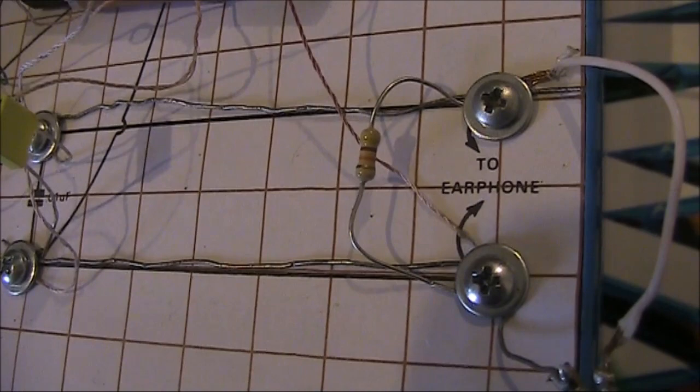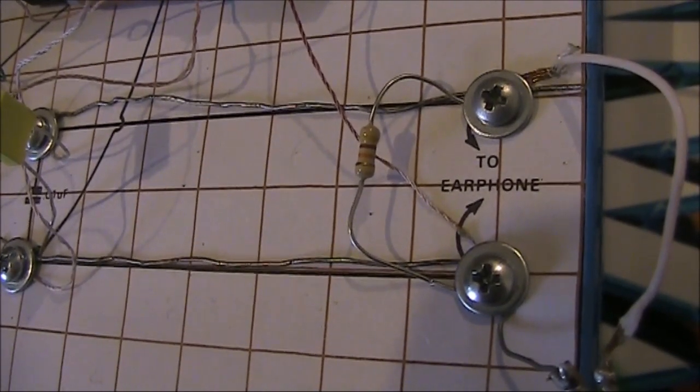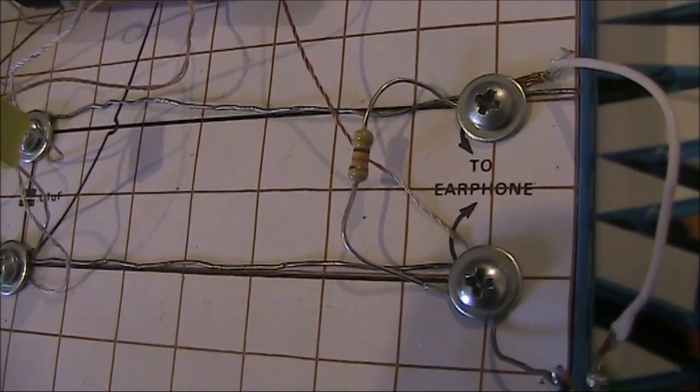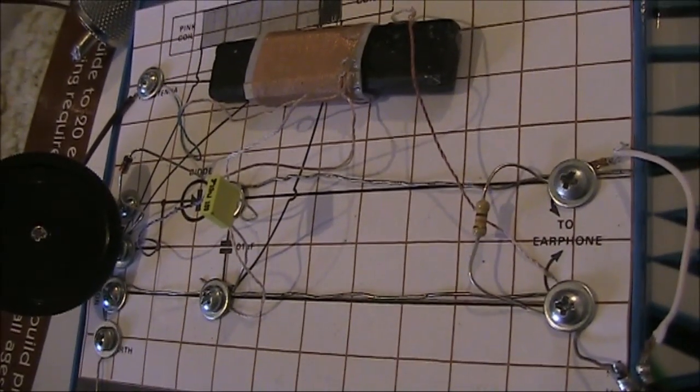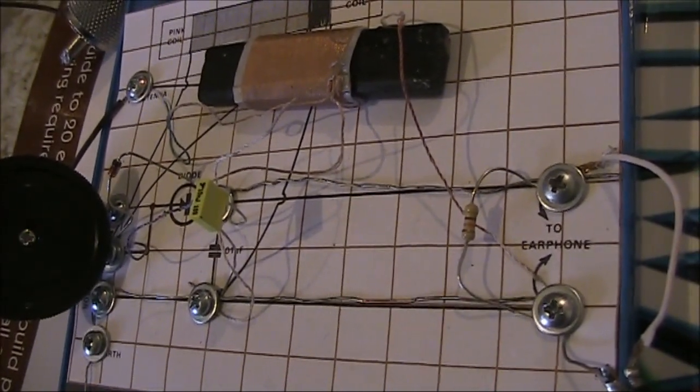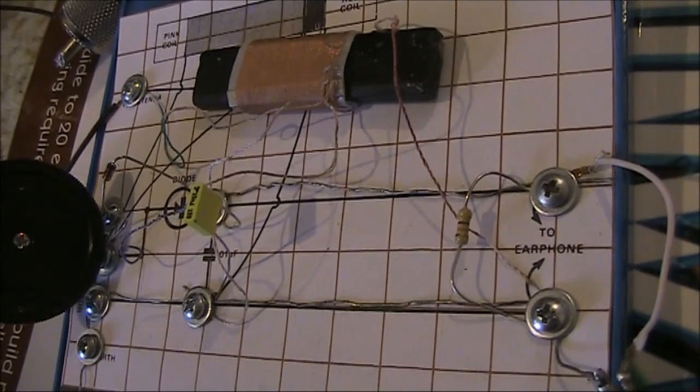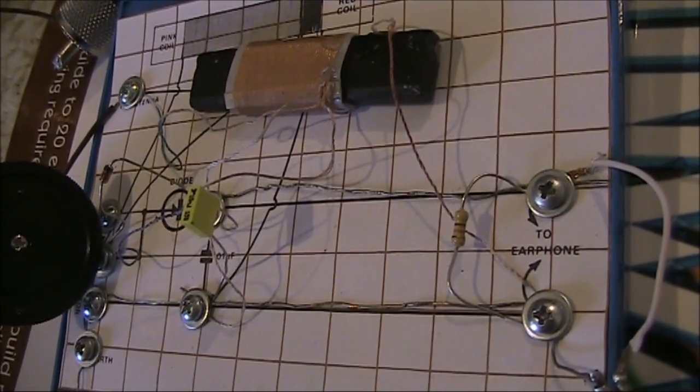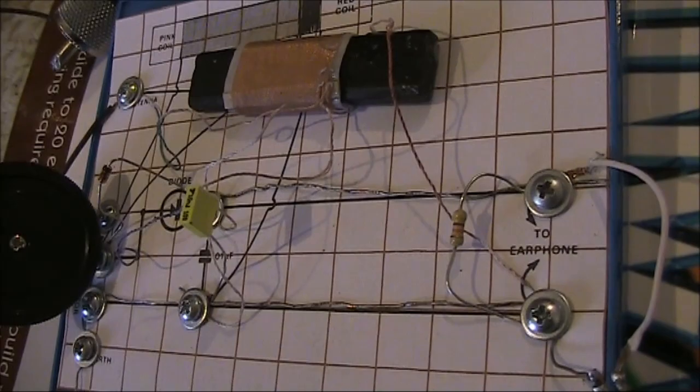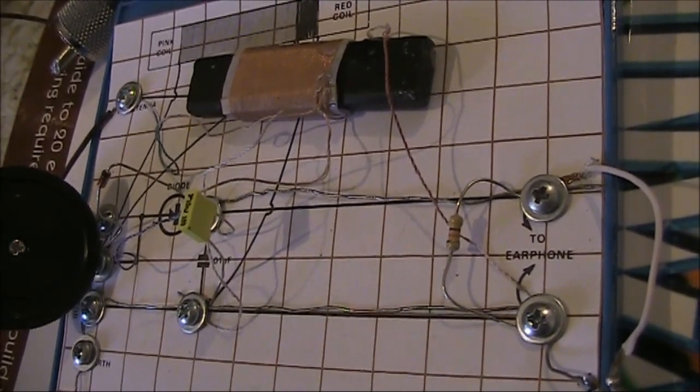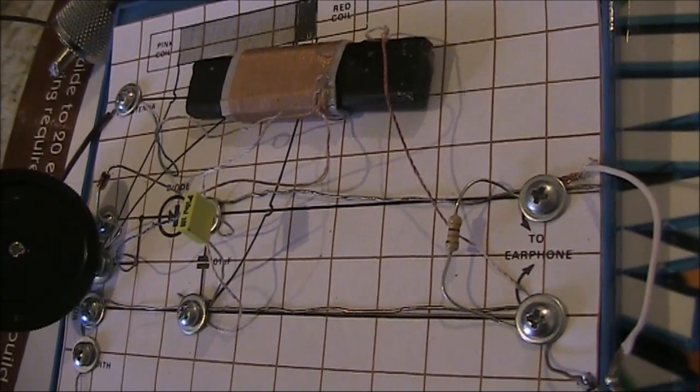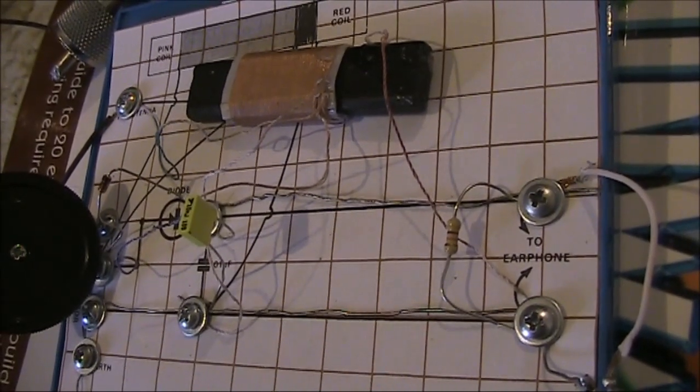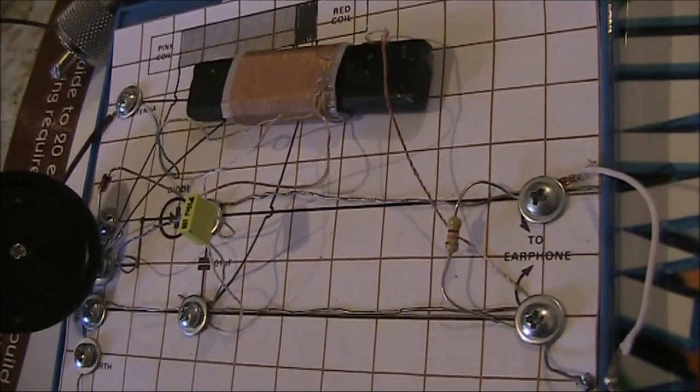Earphones may vary, but this particular one benefited greatly from having the resistor connected across. This is reception with both the antenna and earth connected. I'm not using any audio amplifier and holding the earphone straight up to the camera's microphone. It produces very listenable and even loud audio at this location.